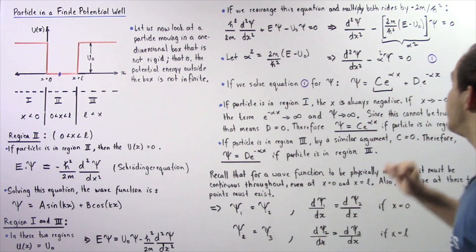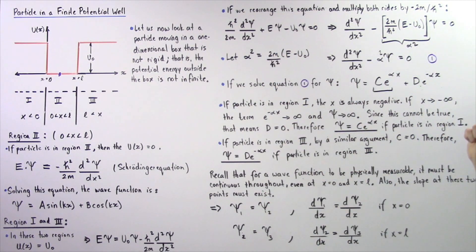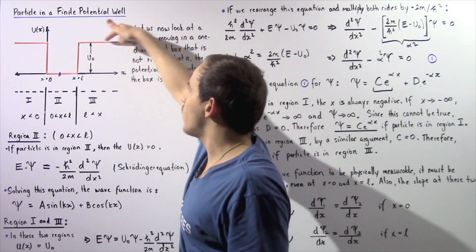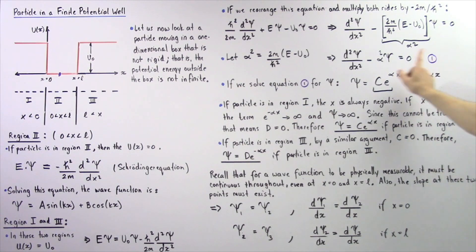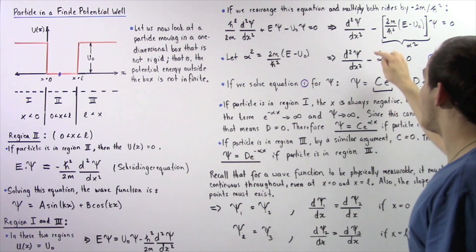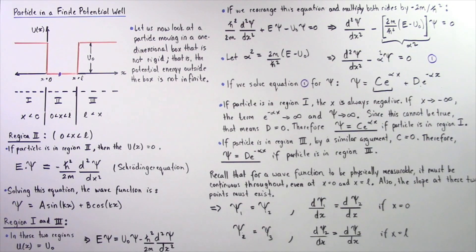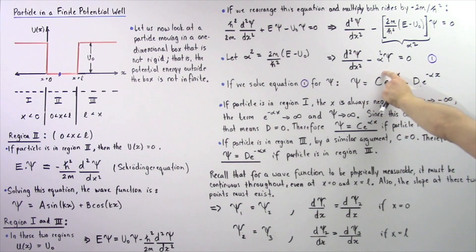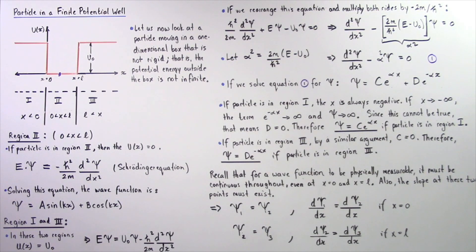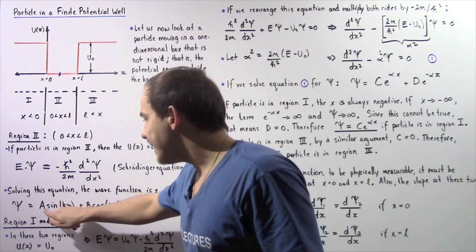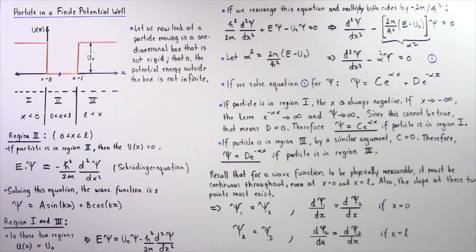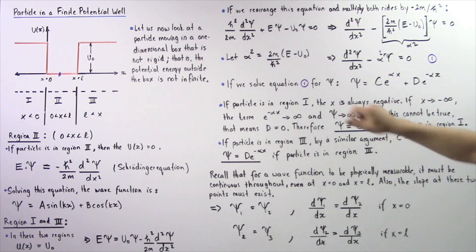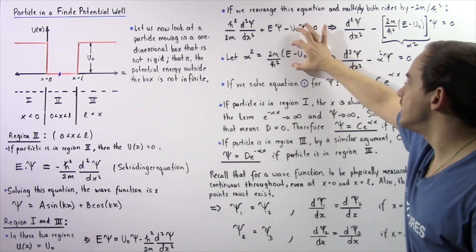Solving equation 1 for the wave function ψ, we get ψ equals C·e^(αx) plus D·e^(-αx), where C and D are unknown constants and α is the square root of 2m(u₀ - E)/ħ².